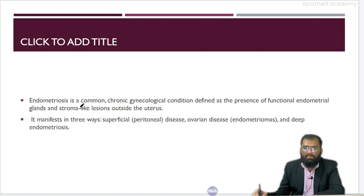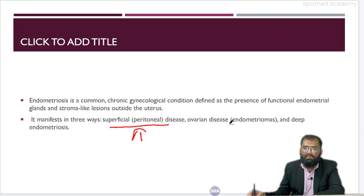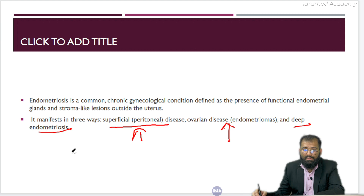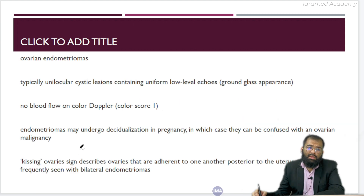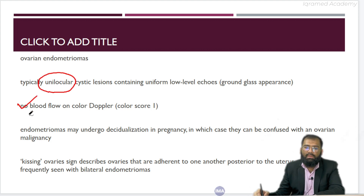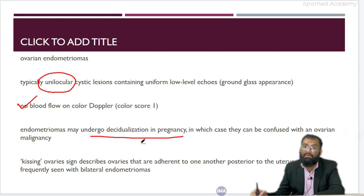Endometriosis is one of the common conditions, manifesting as either peritoneal disease — superficial peritonitis — or ovarian disease, which is called endometriomas, or it can have a deep pelvic type of endometriosis. Ovarian endometriomas are typically unilocular cysts. They show no colour flow on Doppler, show ground glass appearance, and may undergo decidualization in pregnancy, which should not be confused with malignancies.